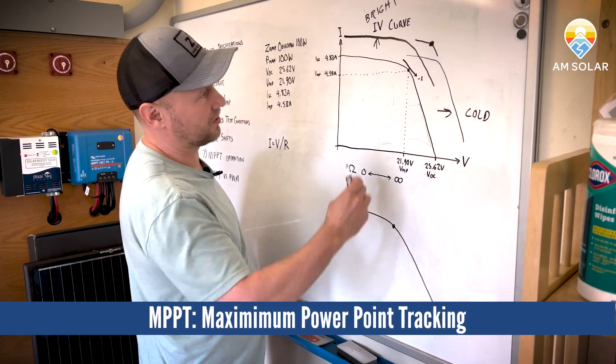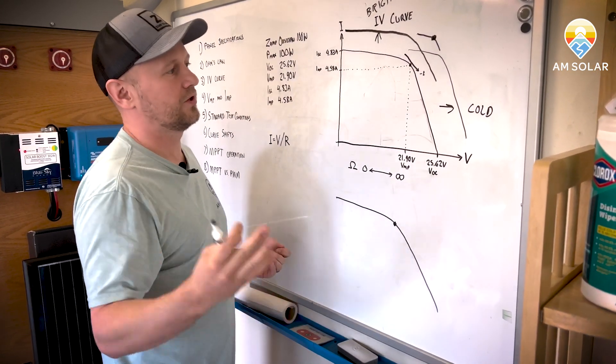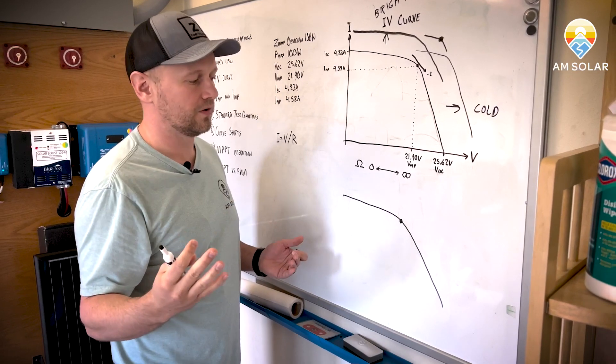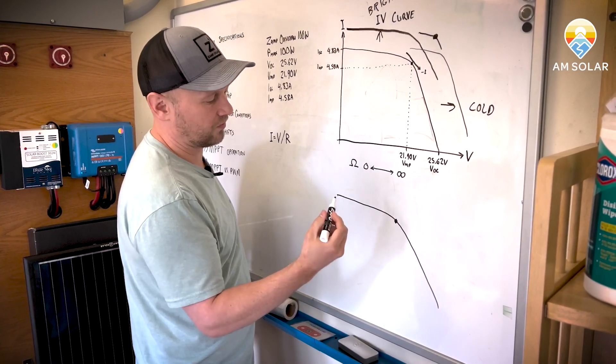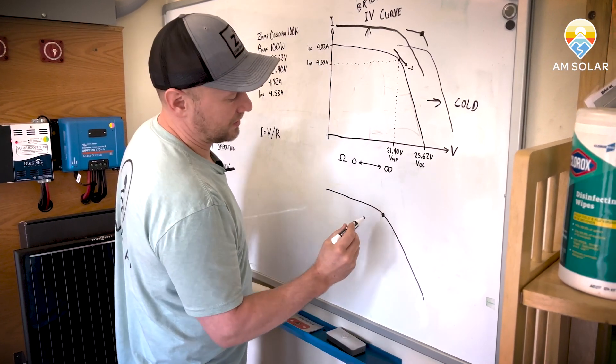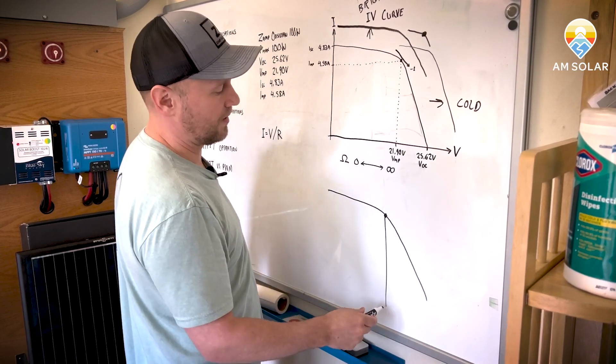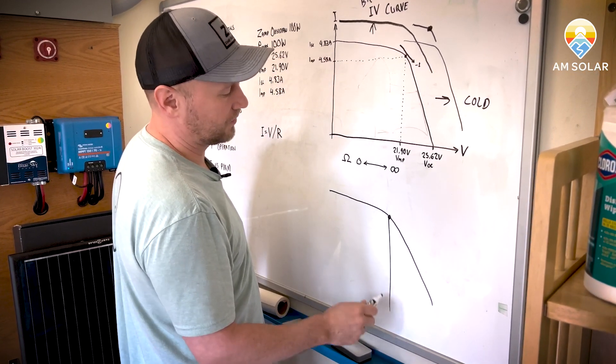So this curve is just constantly changing depending on, you know, there's the temperature, if clouds go by, if you go in some shade or whatever. So the charge controller, like one example of an MPPT algorithm might be that it just selects a starting point. And it says, we're going to draw power from the panel at this voltage right here.